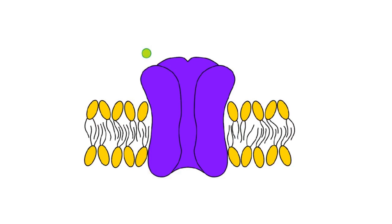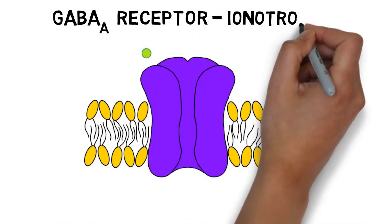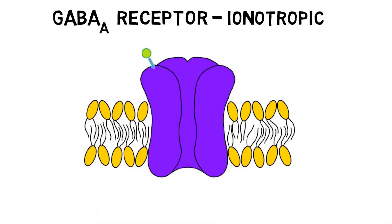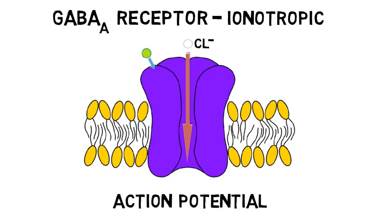There are two types of receptors GABA interacts with: GABA-A and GABA-B receptors. GABA-A receptors are ionotropic receptors. When GABA binds to the GABA-A receptor, it causes the opening of an associated ion channel that is permeable to the negatively charged ion chloride. When negative chloride ions flow into the neuron, they hyperpolarize the membrane potential of the neuron and make it less likely the neuron will fire an action potential.